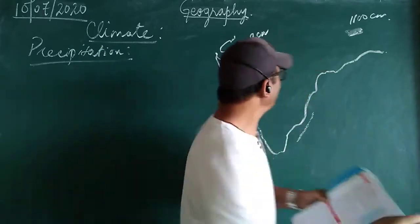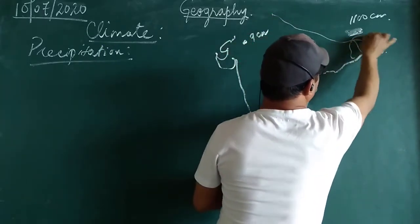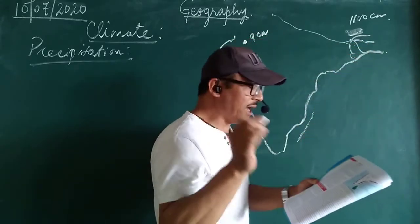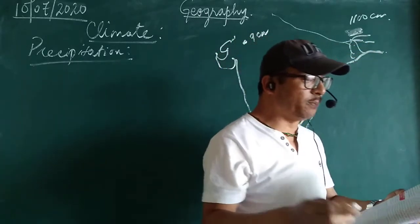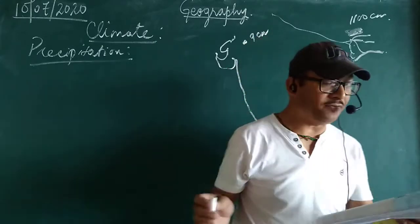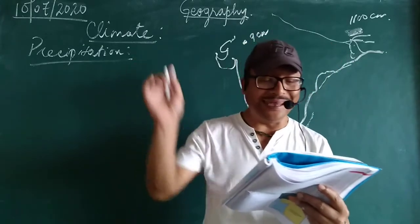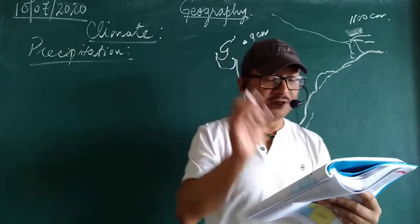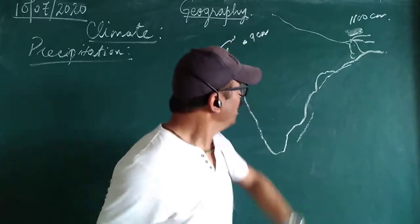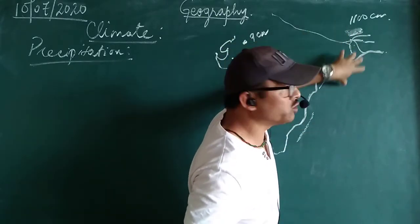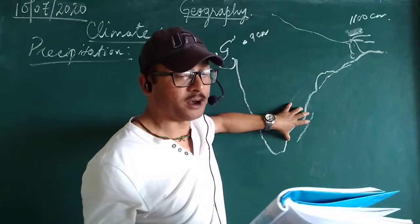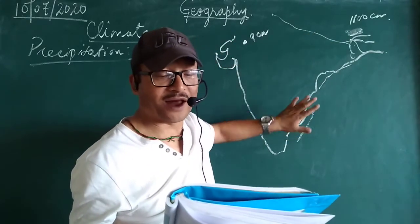Whereas the Ganga Delta and the coastal plains of Odisha — these have been hit by storms almost every third or fifth day during July and August. Whereas this Coromandel Coast will be completely dry. Most parts of India receive rainfall from the month of June to September. But the coastal areas of Tamil Nadu — this coast will receive rainfall in the beginning of the winter season. Here there is winter rain.